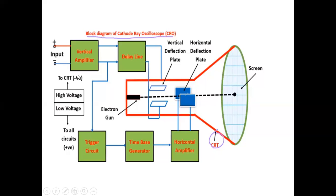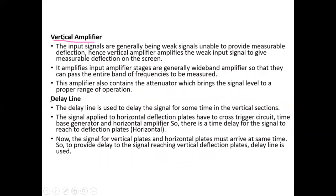We will now discuss each block one by one. First: the vertical amplifier. The input signals are generally weak signals, unable to provide measurable deflection. Hence we require the vertical amplifier, which amplifies the weak input signal into a measurable deflection on the screen — converting the weak signal into a measurable signal.